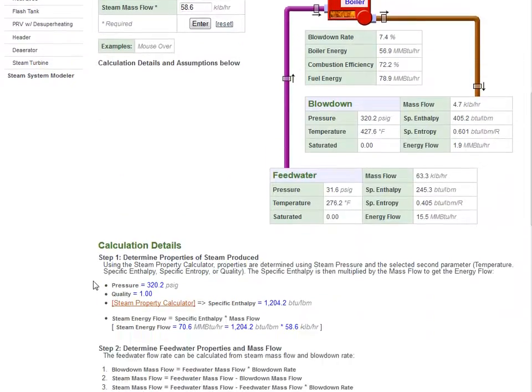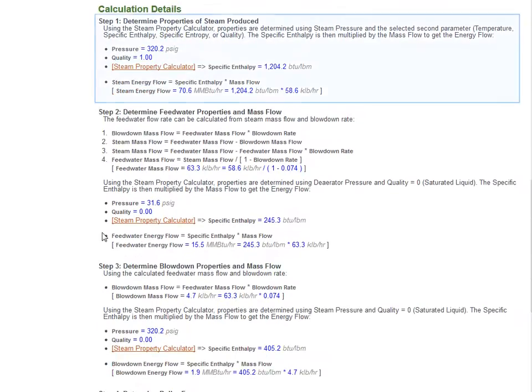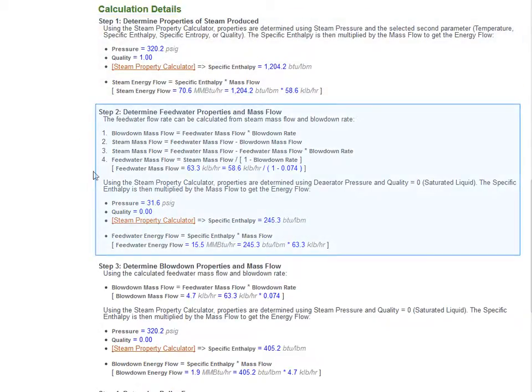The calculation begins by determining the properties of the generated steam. The mass flow of the feed water is then calculated using the blow down rate and steam mass flow. The properties of the feed water are set to those of a saturated liquid at deaerator pressure.